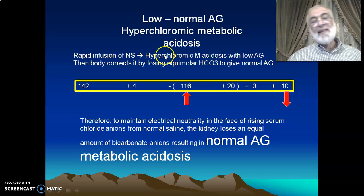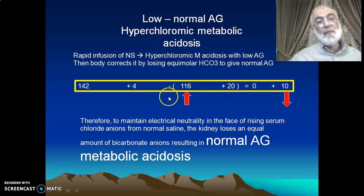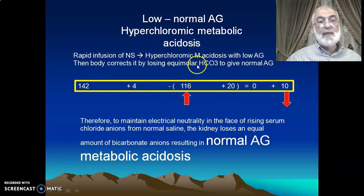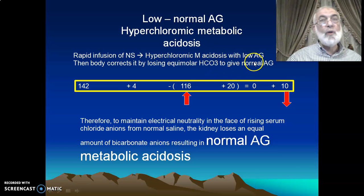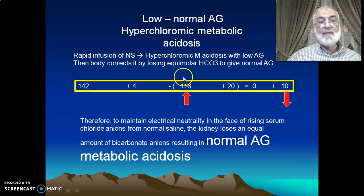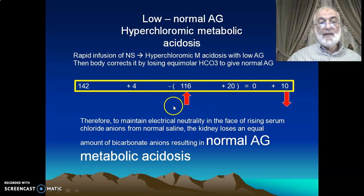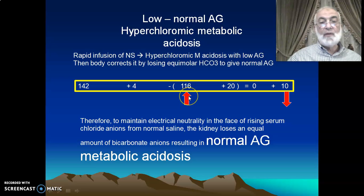With normal saline, rapid infusion causes hyperchloremic metabolic acidosis with initially low anion gap. But the kidney corrects it by loss of bicarbonate, so finally it stays as hyperchloremic metabolic acidosis with normal anion gap.